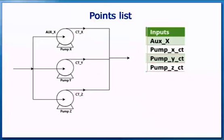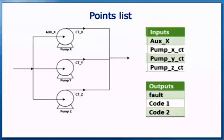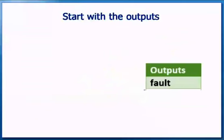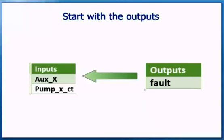There are three digital outputs. The first is Fault, to indicate when PUMPX is in a fault condition. The next two are code bits that can indicate how many pumps are running. Divide the whole project into a series of smaller tasks by dealing with one output at a time. Start with the outputs and work back to the inputs by deciding what has to happen for the output to come on.